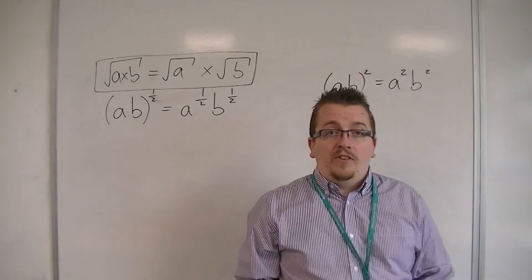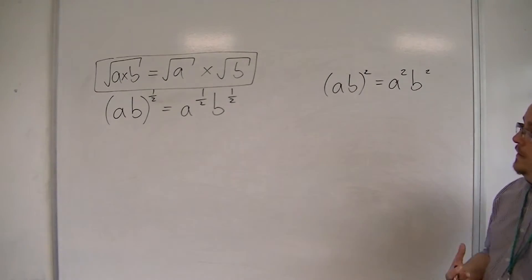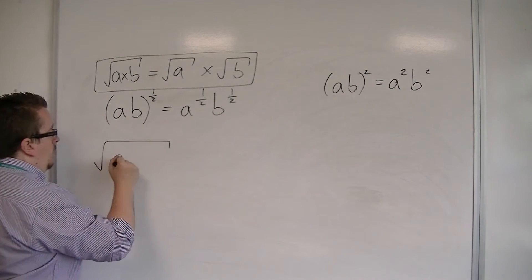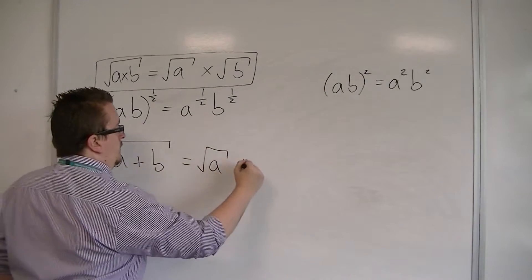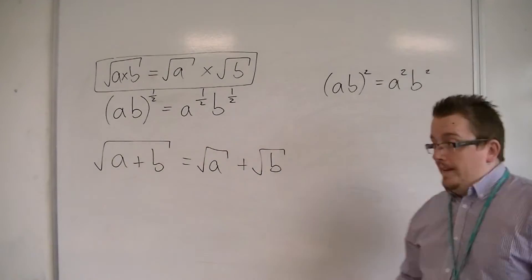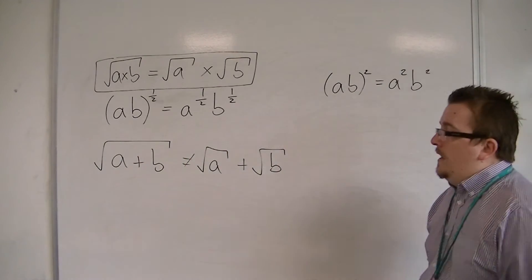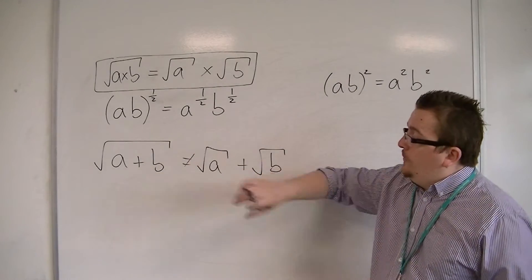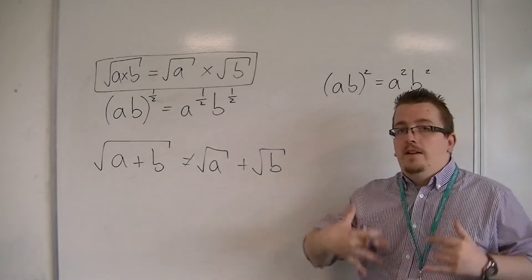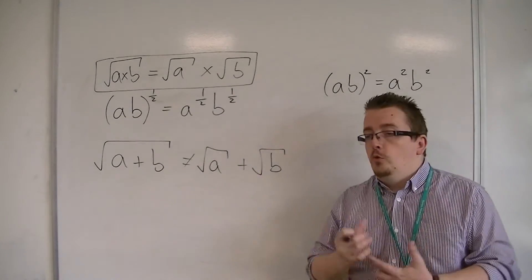Now, a common misconception for students learning about surds is that then, if that works, then perhaps this also works. And sadly, this doesn't work in general. So in general, if you have a square root of a plus b, it's not equal to the square root of a plus the square root of b. You can't just split a square root up in that way. It works for multiplication, but it doesn't work for addition or subtraction.